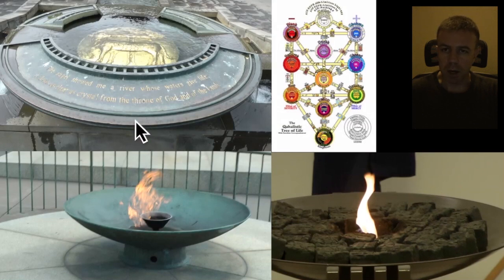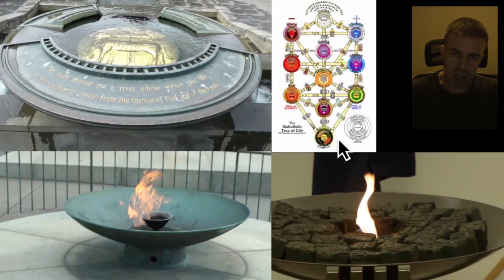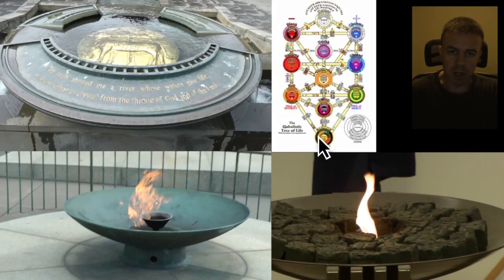I want to focus on this first part of the fountain here. As I've already done, I have likened it to the bottom sephira — the sephira of Malkuth — on the Kabbalistic Tree of Life. Within the sephira here we have earth, water, air, and fire — the four elements represented here as well.